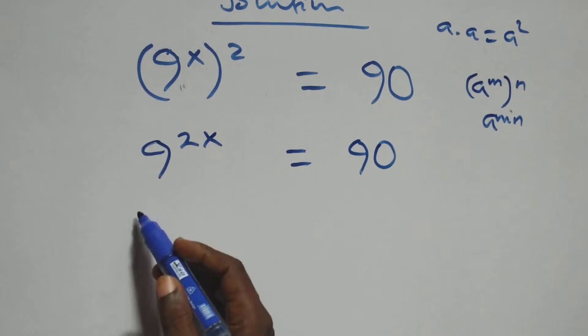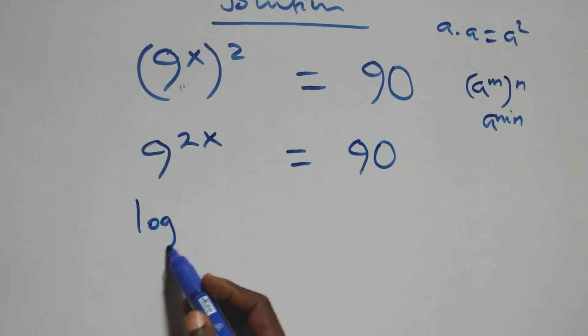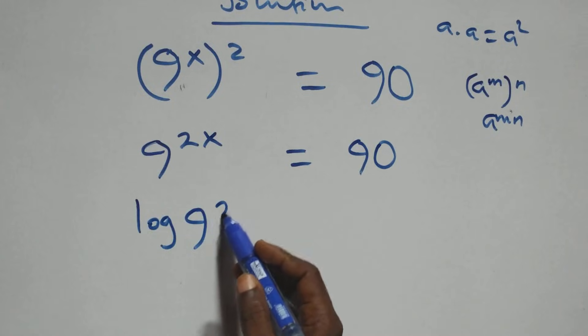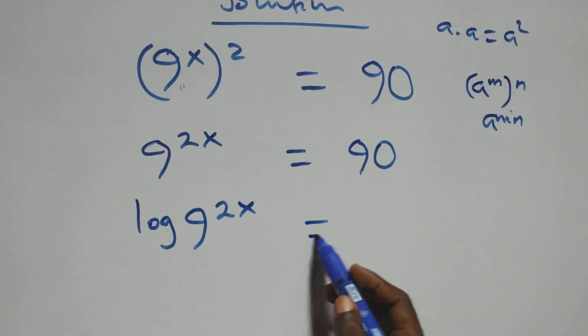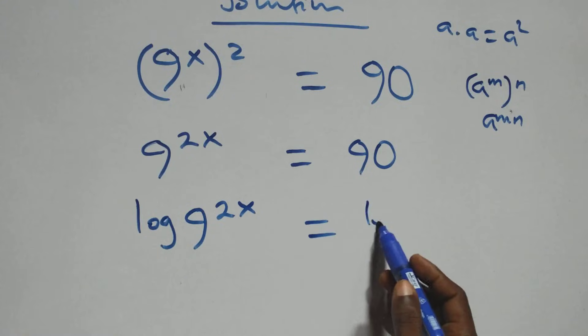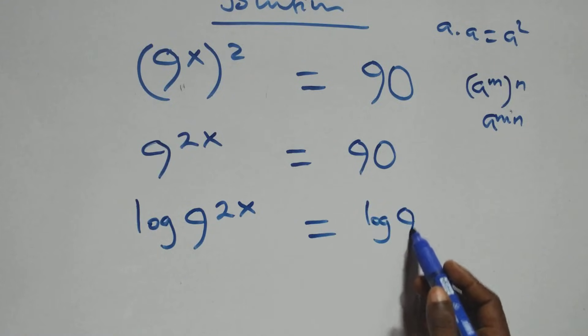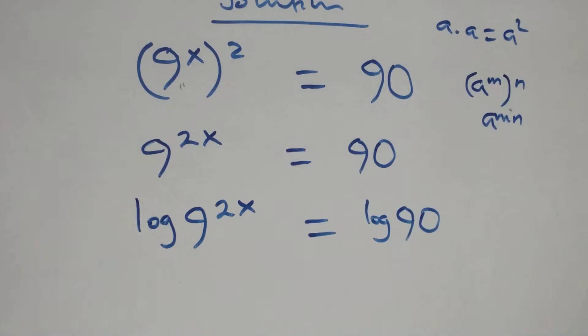From here we take the log on both sides. This gives us log of 9 raised to the power 2x equals to log 90.